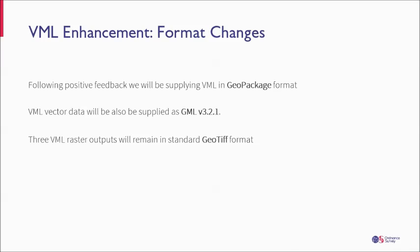Moving on to the format changes we've been able to put in place: we've managed to add GeoPackage to the format catalogue, so you can now order VectorMap Local in GeoPackage if you're taking the vector data. If you're still taking GML, we've updated that to version 3.2.1, which is a lot easier to use in many of the new software packages and brings us more up to date on the version of GML. There are no changes to the raster formats, so you can continue using those as before.